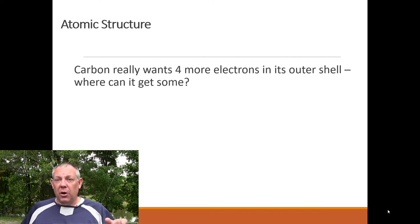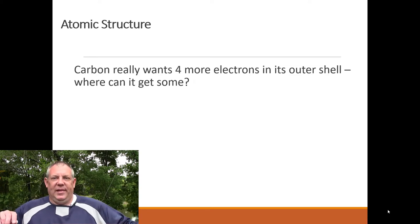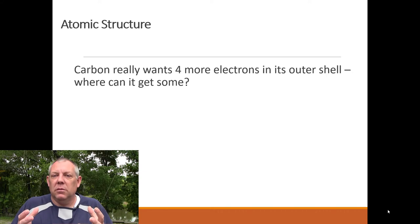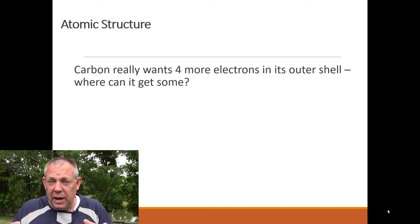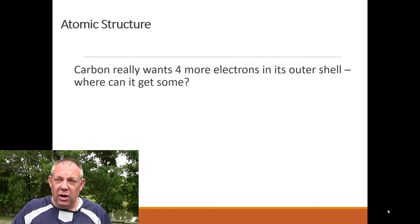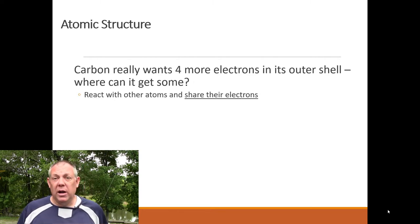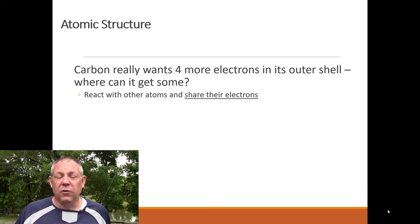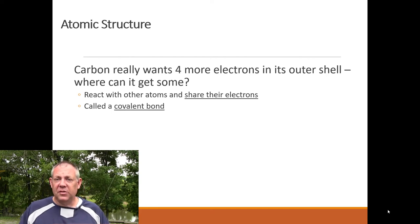Carbon wants four more electrons to fill its outer shell. It can't just grab free electrons because it's already charge-balanced — taking on extra electrons would give it a negative charge. How can it fill that outer shell and still maintain the balance of charge? A great way is to share electrons with another atom. When this happens, that's a chemical reaction and you form a covalent bond — the sharing of electrons.